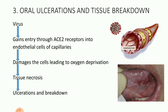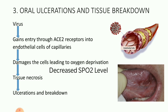Coming on to next — oral ulcerations and tissue breakdown. The virus gains entry through the ACE2 receptors. All the capillaries are lined with endothelial cells, and these endothelial cells have a high amount of ACE2 receptors. Because of the highest affinity for ACE2 receptors, the coronavirus slips inside the endothelial cells and into the capillaries. On entering the capillaries, it damages the cells, leading to oxygen deprivation and decrease of PO2 levels, which further leads to tissue necrosis, ulcerations, and breakdown of the epithelial tissue.